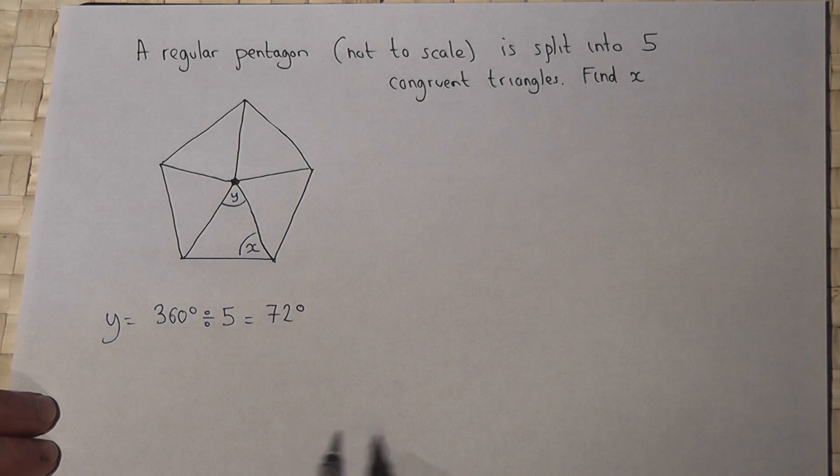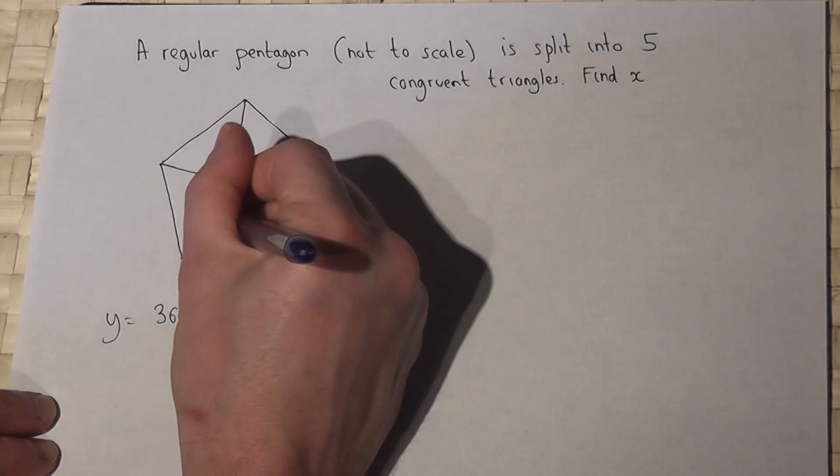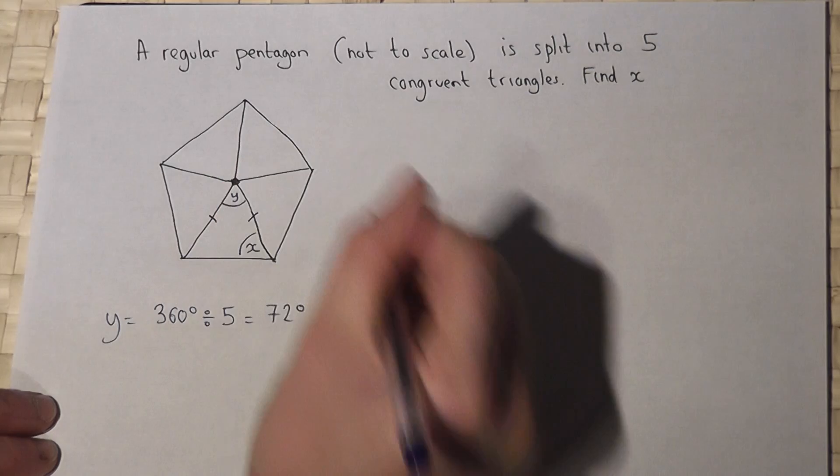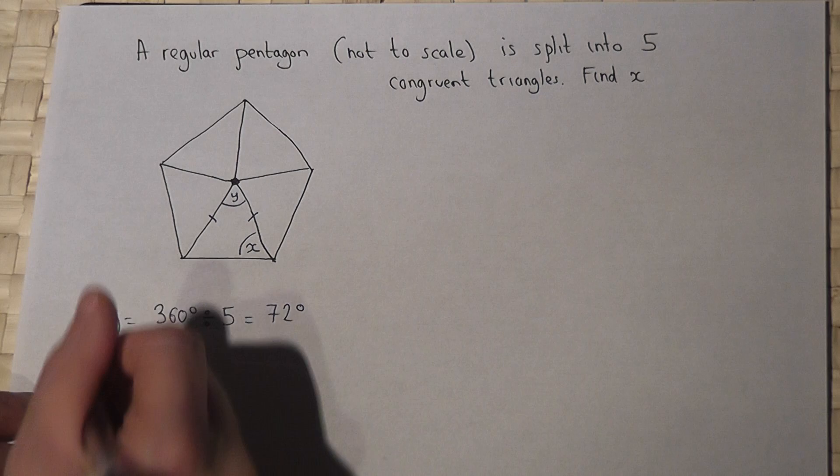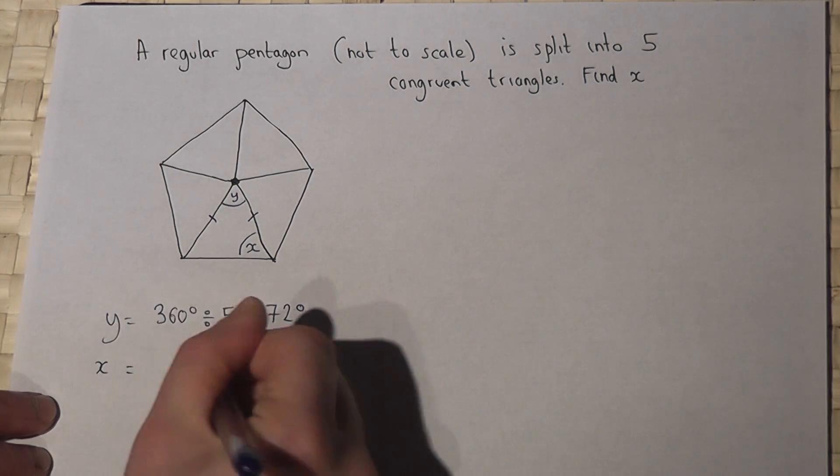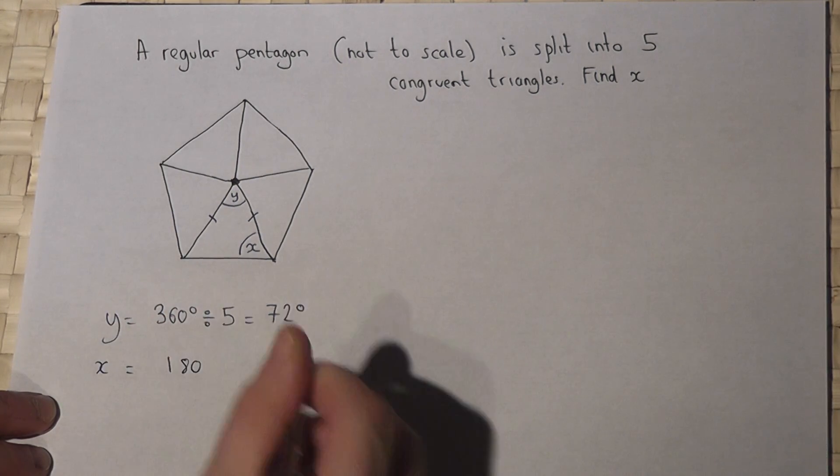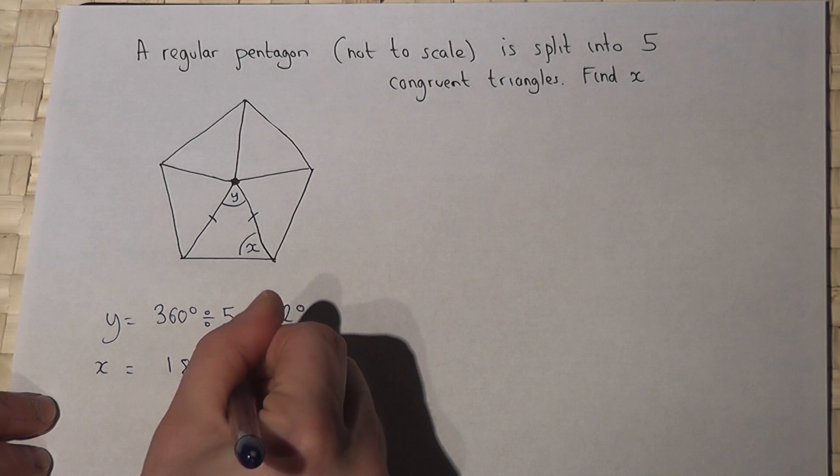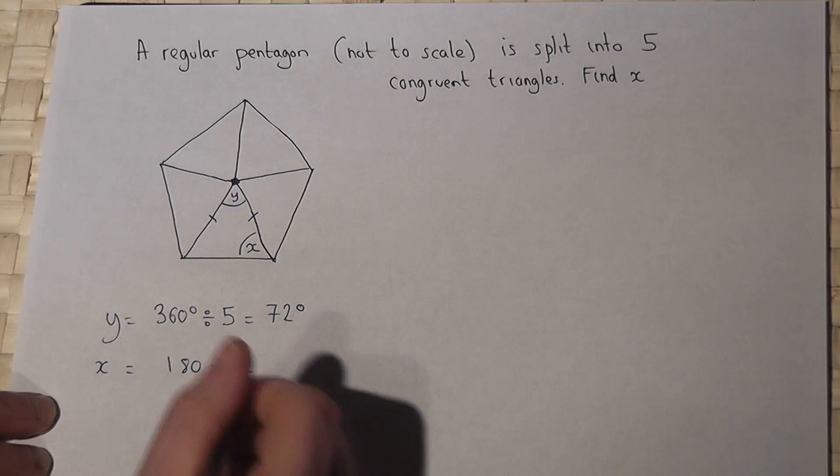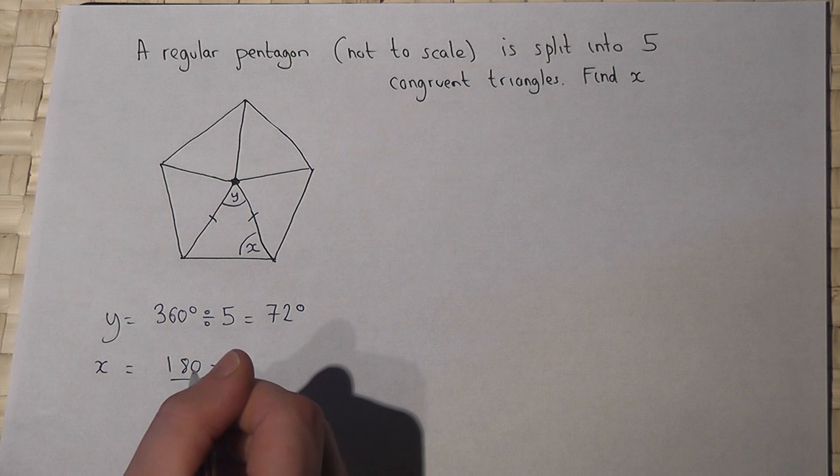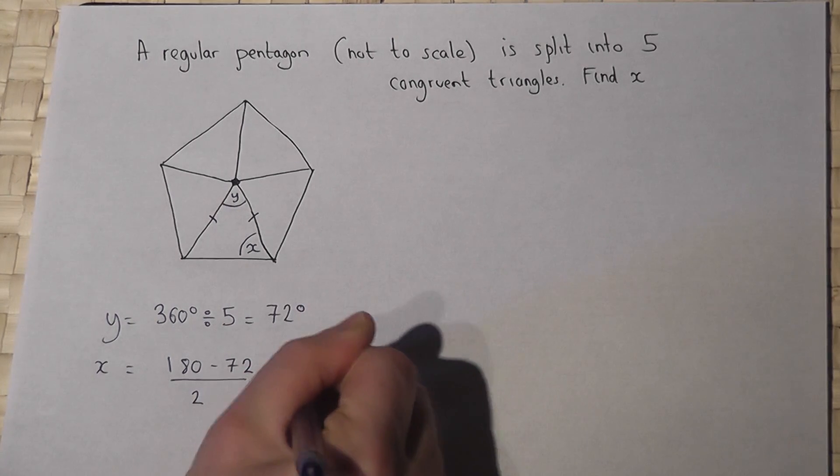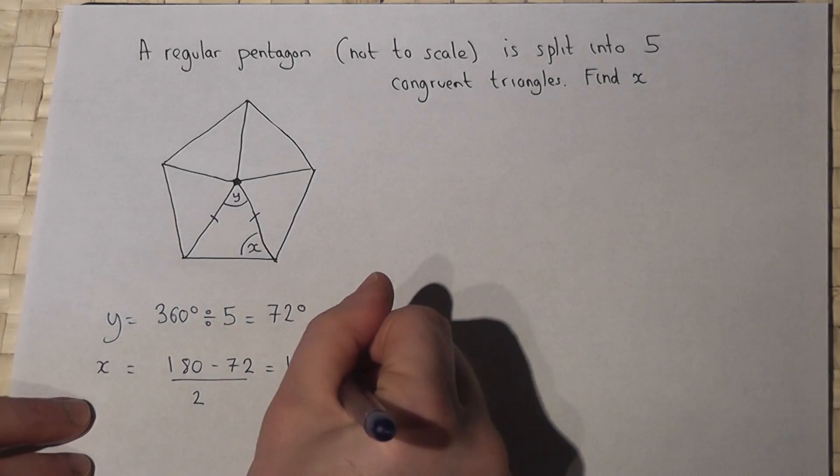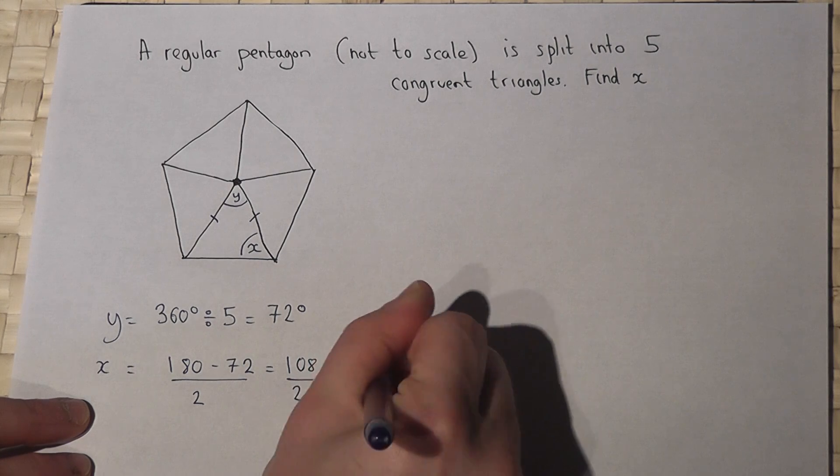Now if Y is 72 we can then find X because these here must be the same length, so therefore this is an isosceles triangle. So to find X we would do 180 degrees take away Y to get the leftover angle and then divide by 2. So 180 take 72 is 108 divided by 2 is 54 degrees.